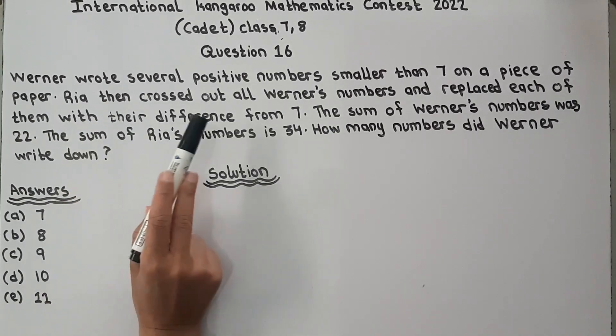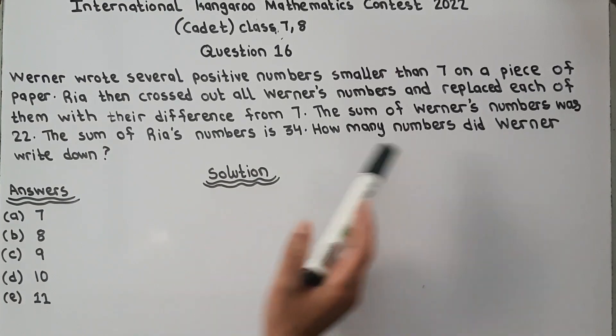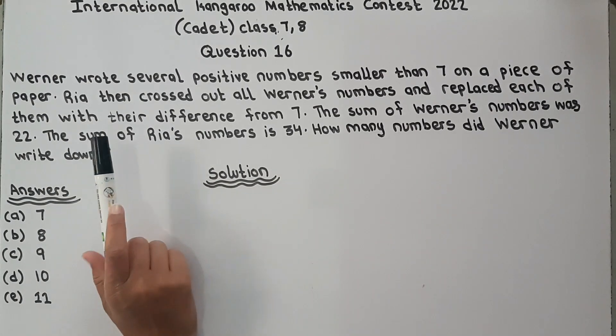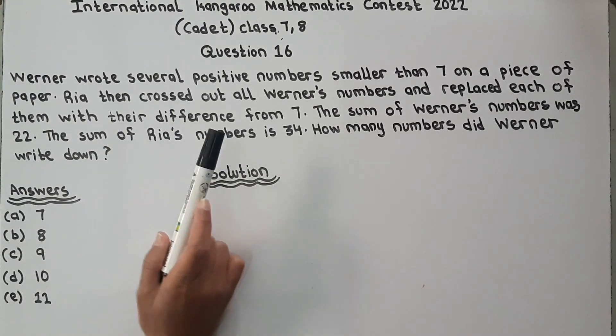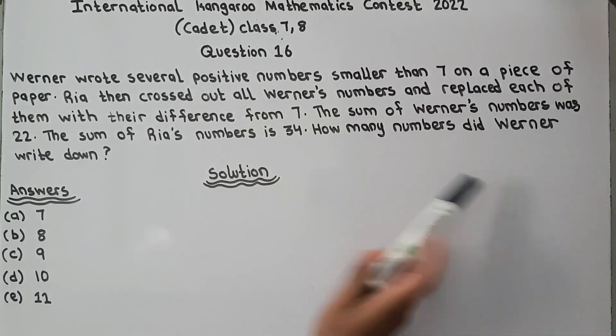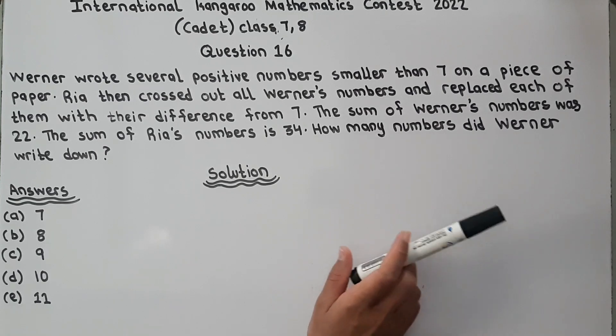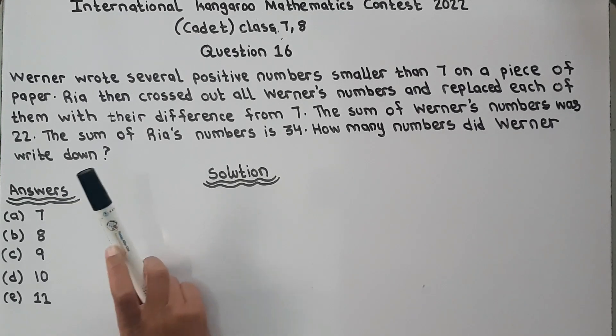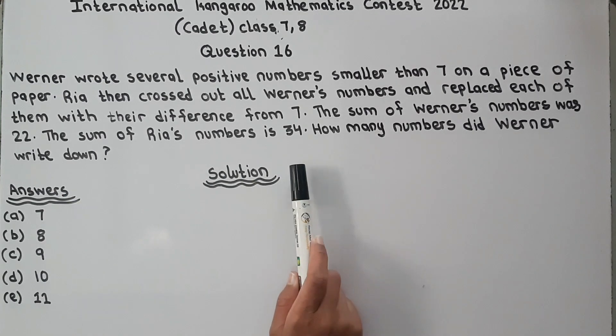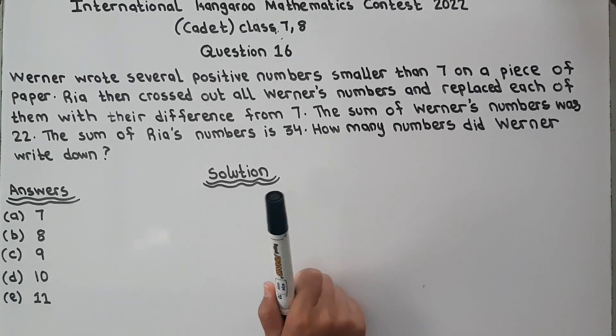Werner wrote several positive numbers smaller than 7 on a piece of paper. Ria then crossed out all Werner's numbers and replaced each of them with their difference from 7. The sum of Werner's numbers was 22, the sum of Ria's numbers is 34. How many numbers did Werner write down?